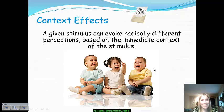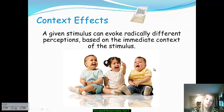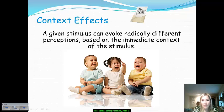It's important to note that the context of stimuli matters when it comes to establishing your mental set and schema. Contextual effects matter when you're trying to interpret the world around you, because that's all perception is. A given stimulus can evoke radically different perceptions based on its immediate context. For example, these babies look upset or crying — but what if they're not? What if this little girl is actually laughing, and her face just looks distorted? Contextual effects matter when we attempt to interpret the information we're presented with.